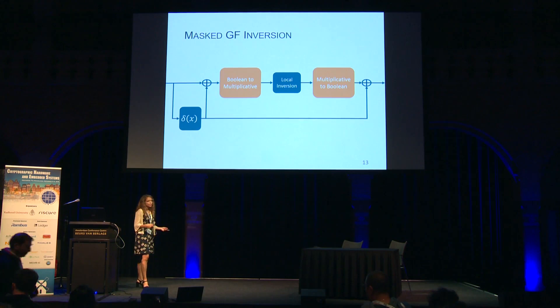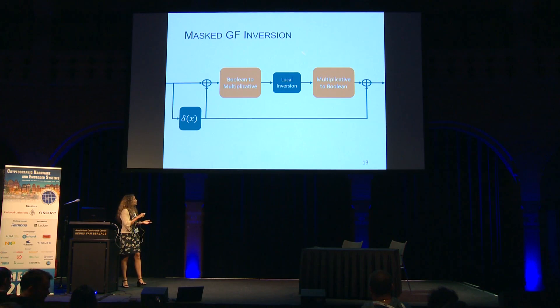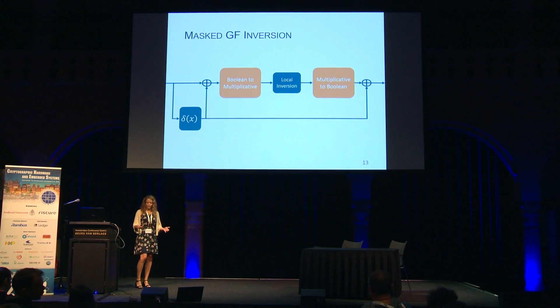Here is the masked AES inversion. We start with Boolean shares at the input. The input goes through a masked version of the Kronecker delta function, which outputs a shared version of one or zero. This is then added to the input, so we can safely convert the Boolean shares to multiplicative shares. With multiplicative shares, the inversion is done locally on every share independently. Then we go back to Boolean masking for the rest of the round function.